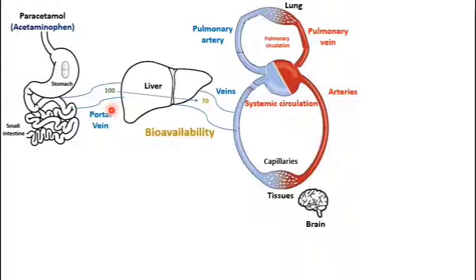But the first time our drug was metabolized by the liver was here when it came from the GIT. So we call the metabolism that occurred at this time the first pass metabolism.